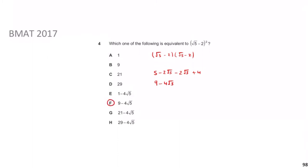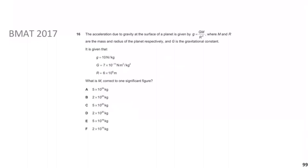Hopefully that wasn't too tricky. I understand some of you probably don't do maths at A-level, so you might be a bit slow on it. But don't worry — as we go through and practice more, these themes will recur and should become pretty easy over time. Now we move on to the next question: BMAT 2017, where it says the acceleration due to gravity at the surface of a planet is given by g = GM/R², where M and R are the mass and radius of the planet, and G is the gravitational constant.